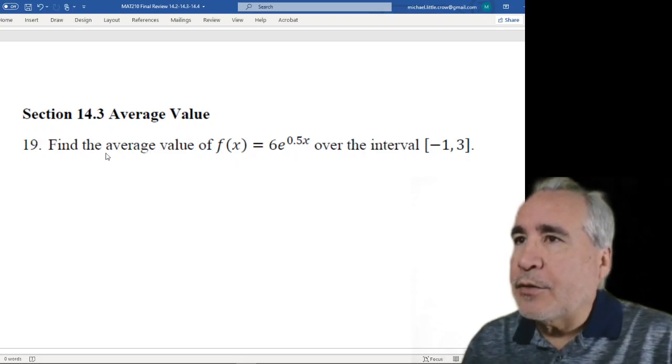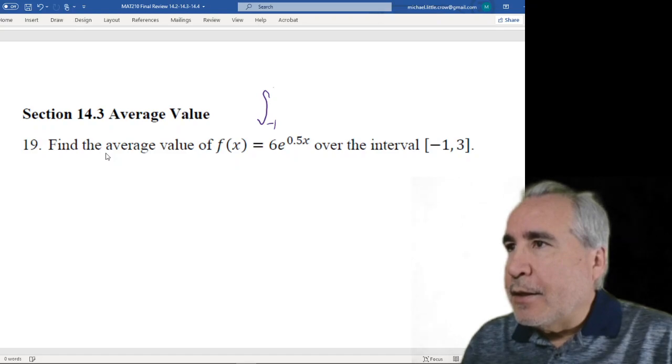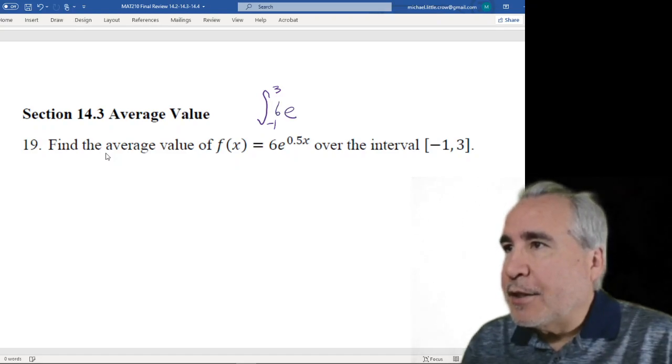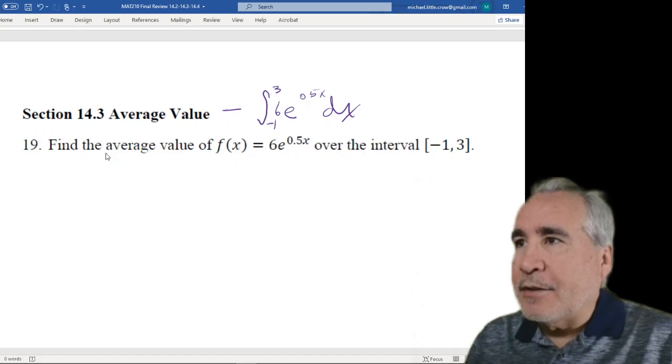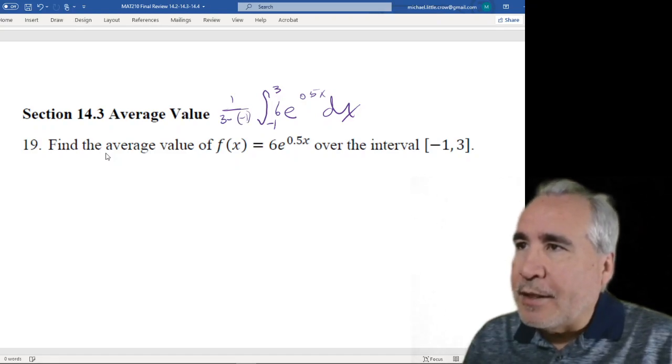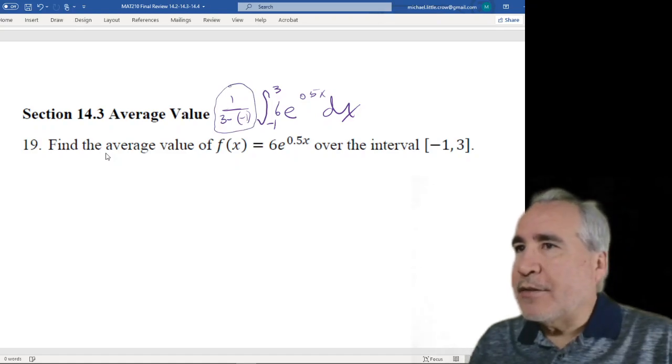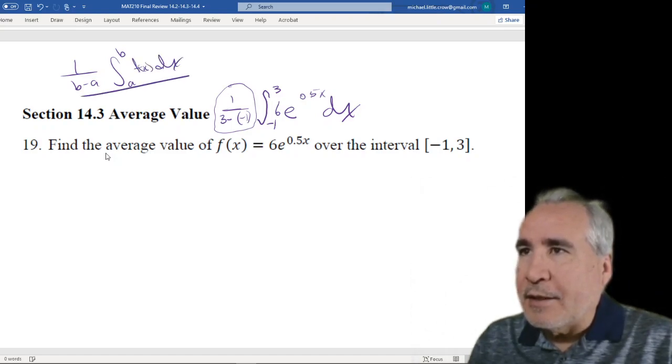What we're going to want to do here is just remember average value says if we're getting the integral, so we're going from negative 1 to 3 of some function, we're going to integrate. We want to find the value, the average value will be this, but to average it out, we divide by the length of the interval, so that'll be b minus a, so 1 over 3 minus negative 1. So this is basically the new part.